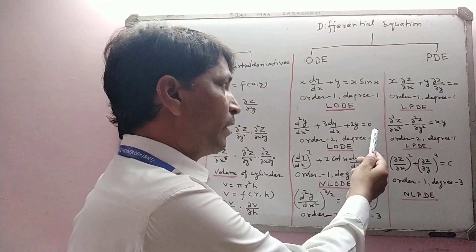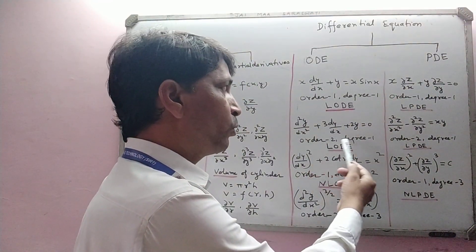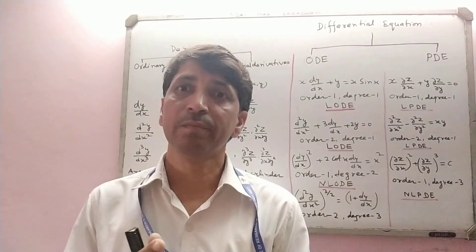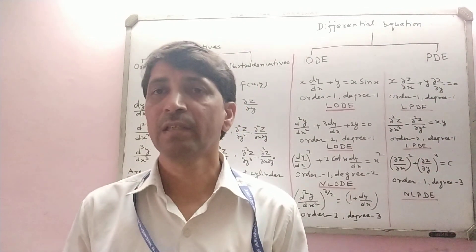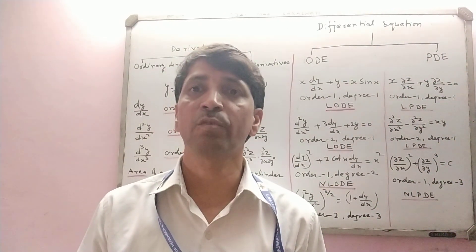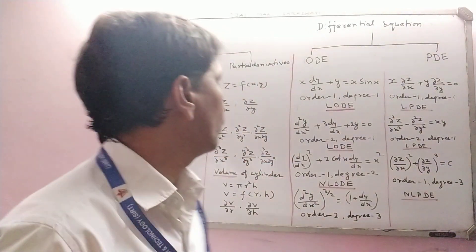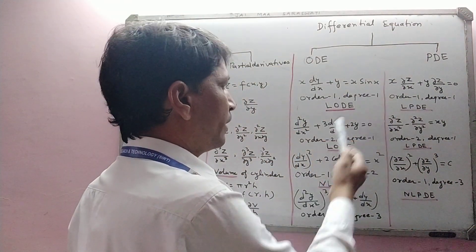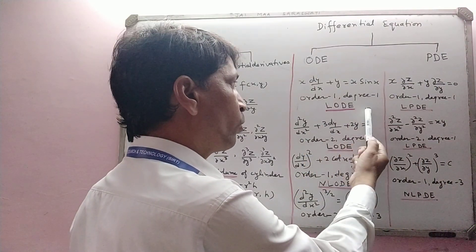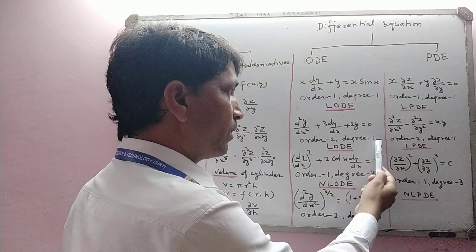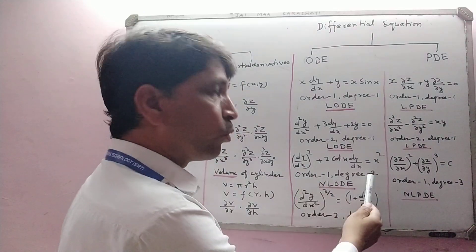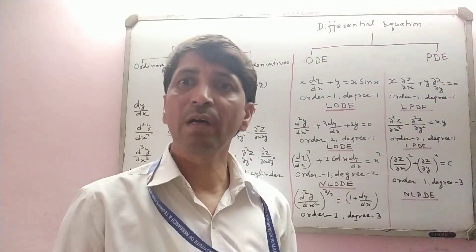This is a second-order linear differential equation — its order is 2 and degree is 1. When the degree of a differential equation is 1, the equation is called linear. So: order 1, degree 1 → linear ODE; order 2, degree 1 → linear ODE; order 1, degree 2 → this is an example of a nonlinear ODE.